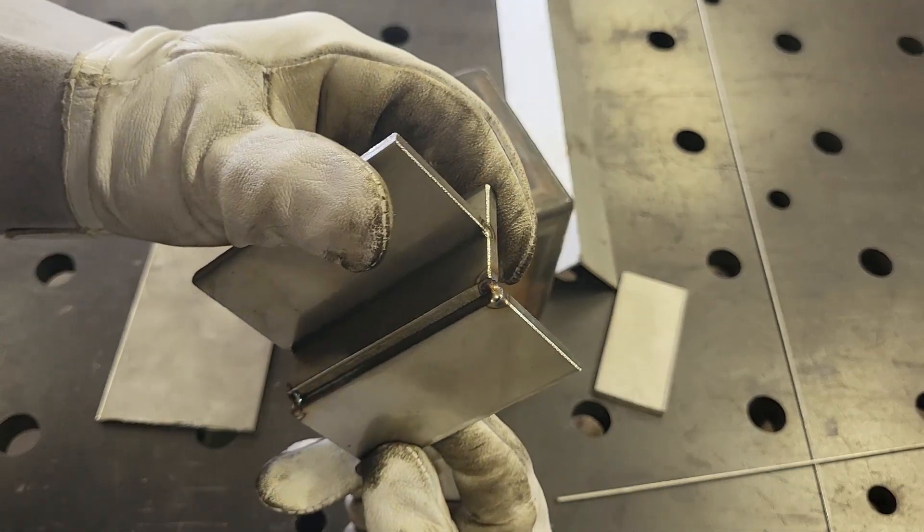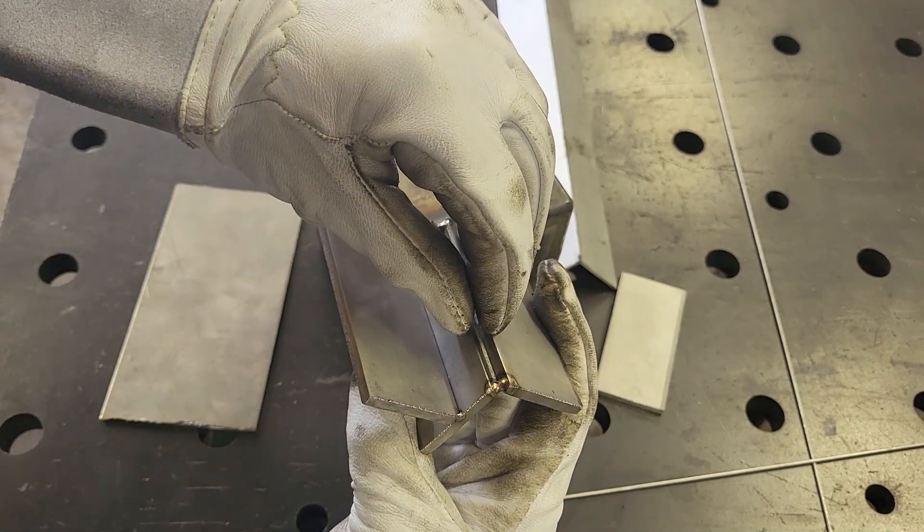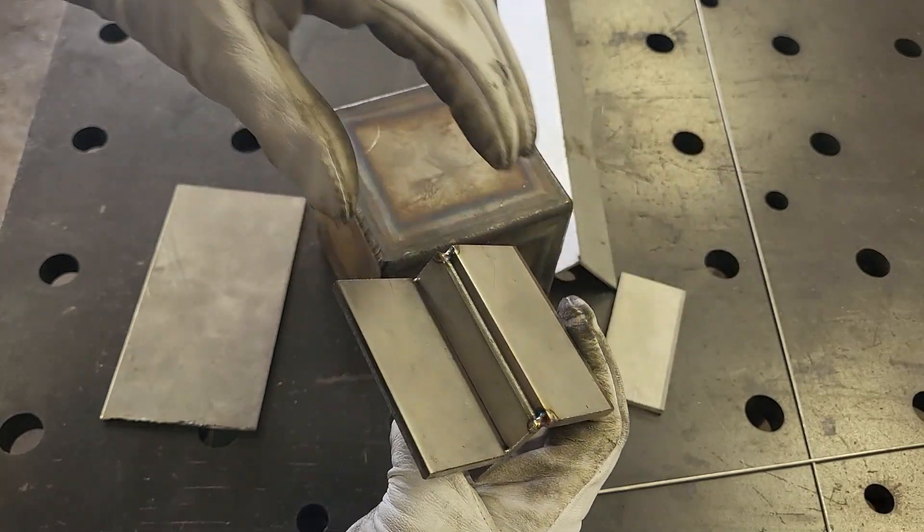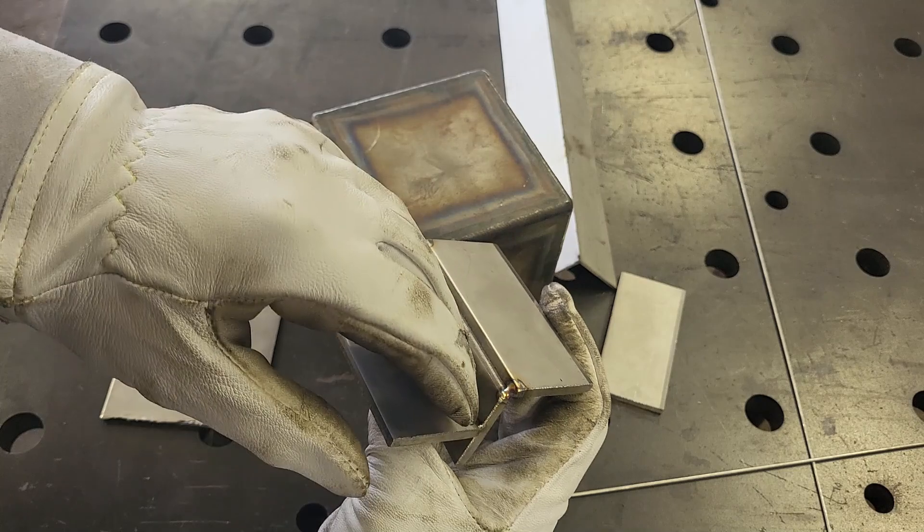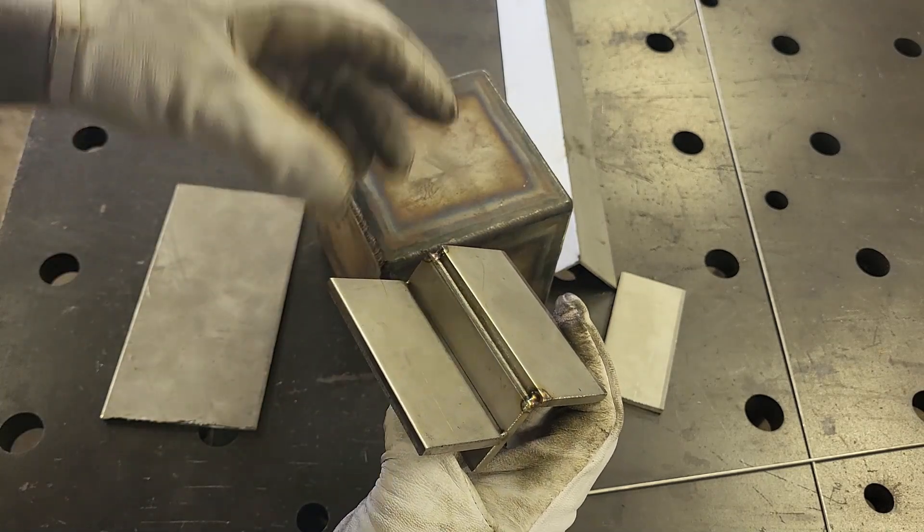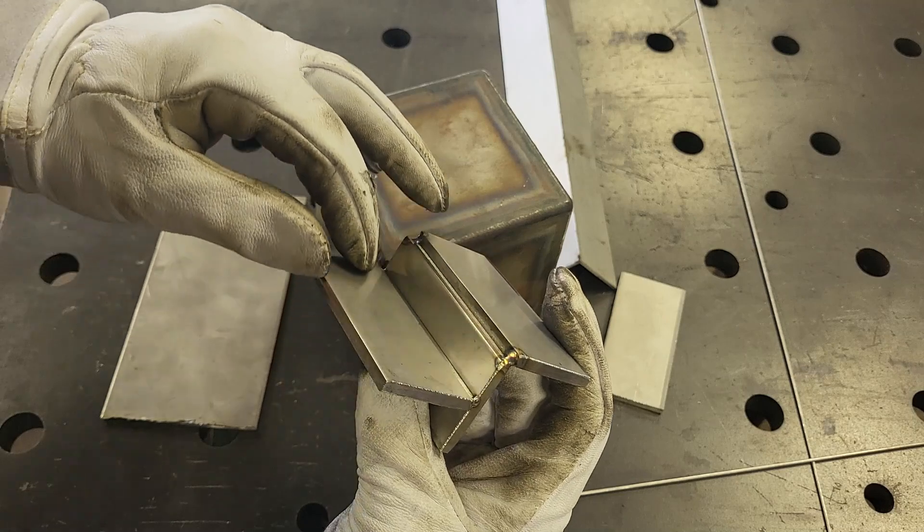And also, one important thing to remember is that the gas is like water. When you are on the outside of a joint, it wants to flow away from the joint, and then you don't get a lot of coverage. But when you're in a crease, it accumulates just like water in a river, and then it wants to stay here, and the weld is always going to be much better.